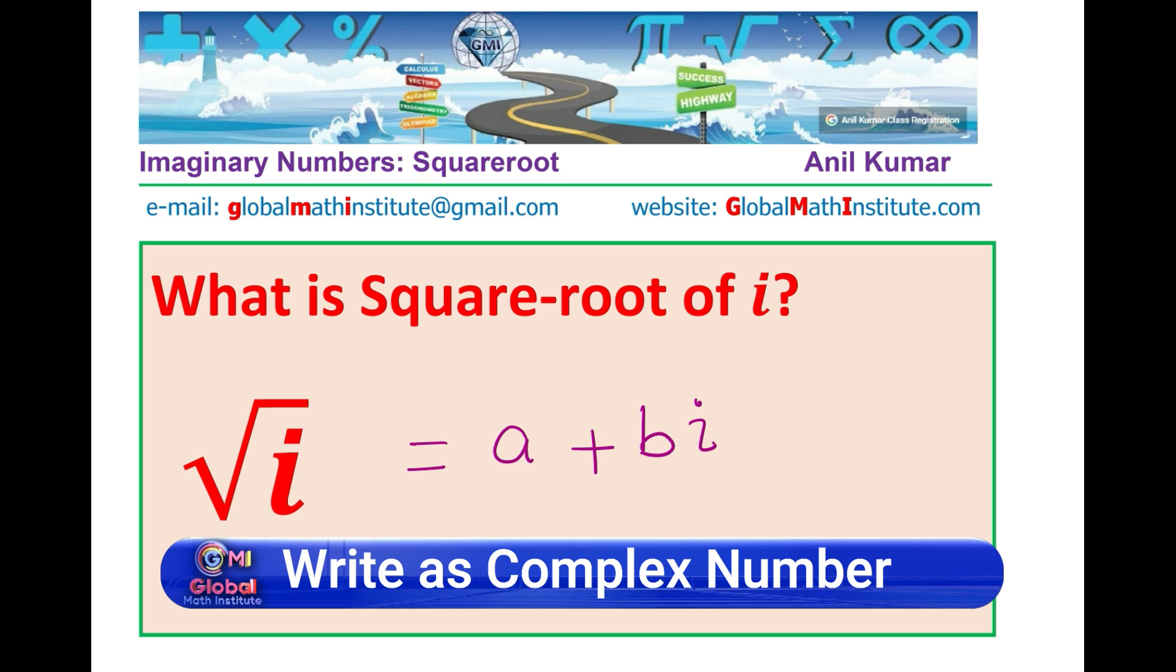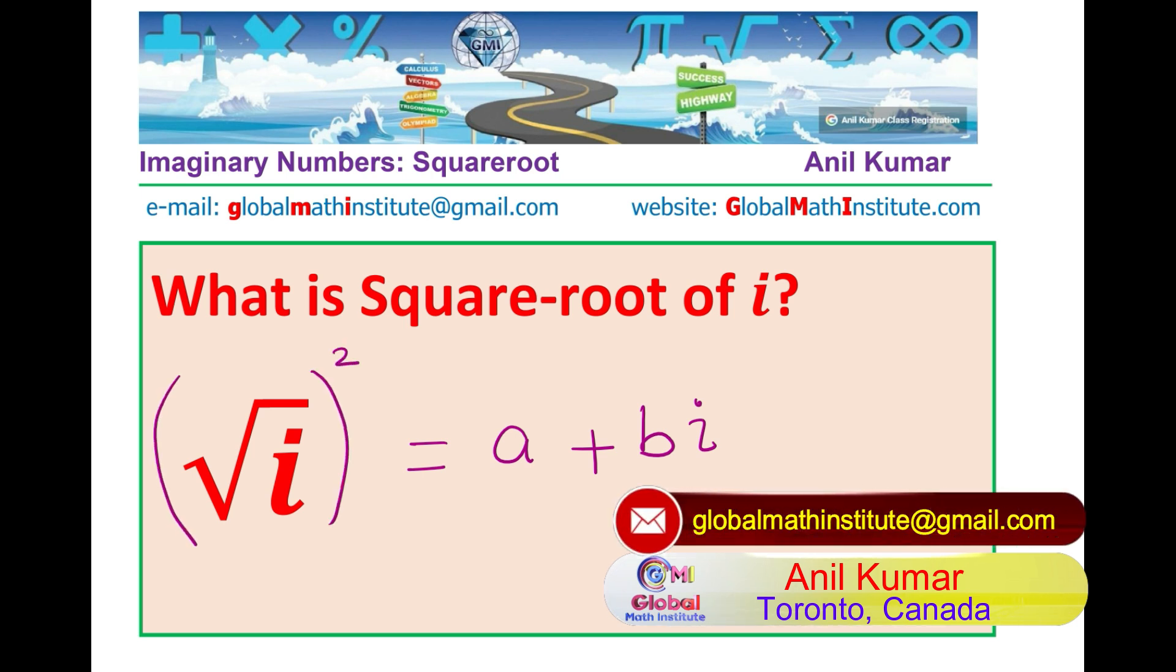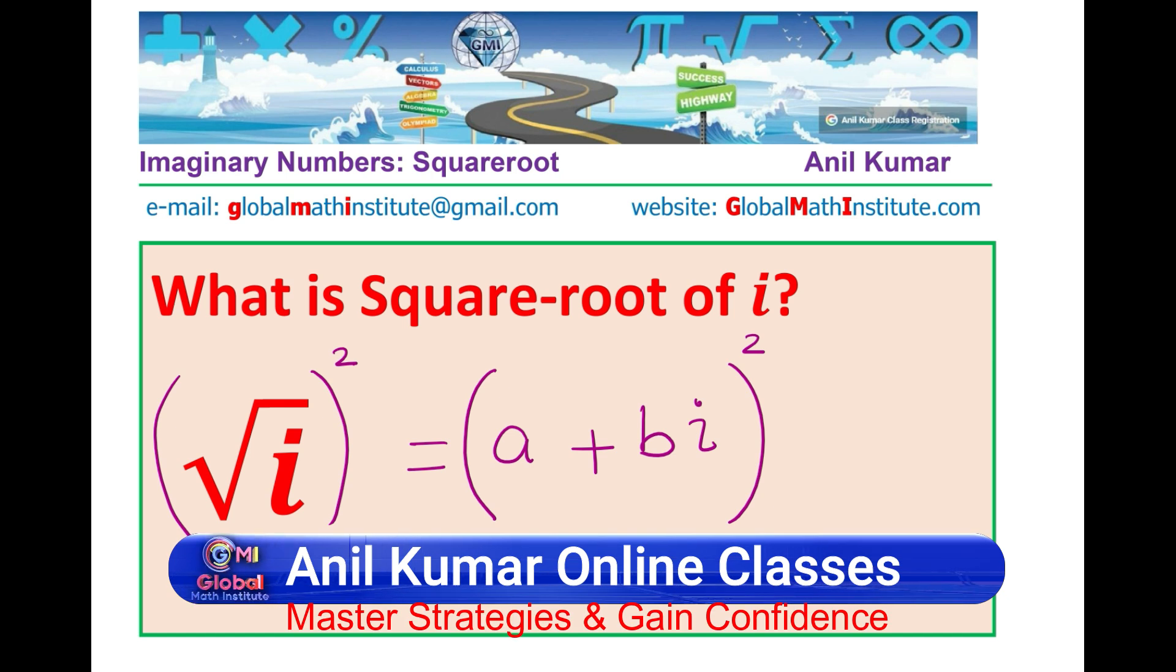Now, how do we get the values of a and b? Simple concept. We can square both sides and then get the solution. So, that is what we are going to do. You can also do same and then look into my solution. So, we are going to square both sides. Once you square, after that, relate the real parts and the imaginary parts to get the value of a and b.